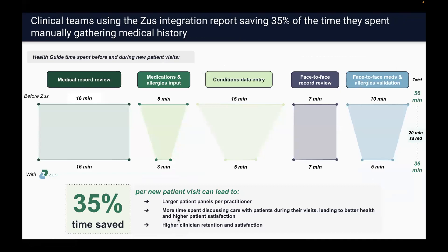As an early proof point, we have some clinical teams using Zeus, and they've worked with us to estimate the amount of time it takes to gather all of this medical data before and after using Zeus. We found that they save about a third of the time — it used to take almost an hour for a staff member to gather all relevant data for a new patient, and now with Zeus it takes about half an hour. By saving this time, they can either free up time to see more patients or spend more time building relationships with existing patients and delivering better care. We're excited to keep seeing how this works for our early customers.